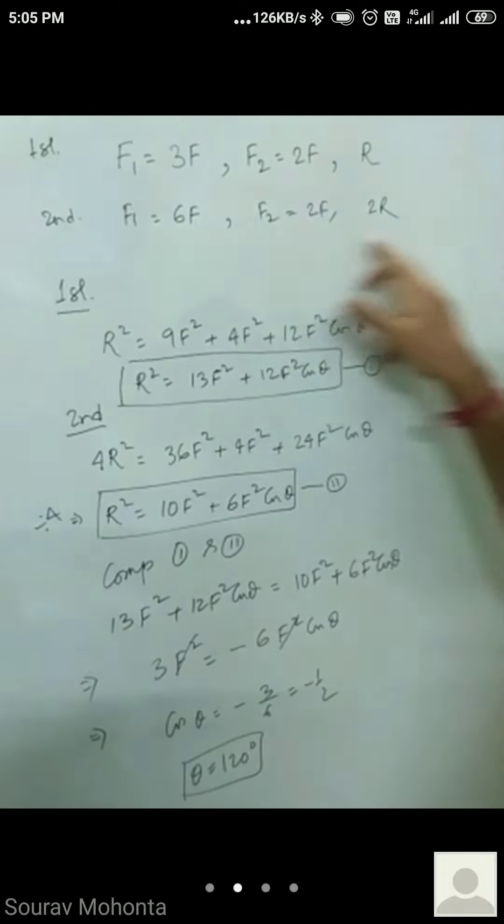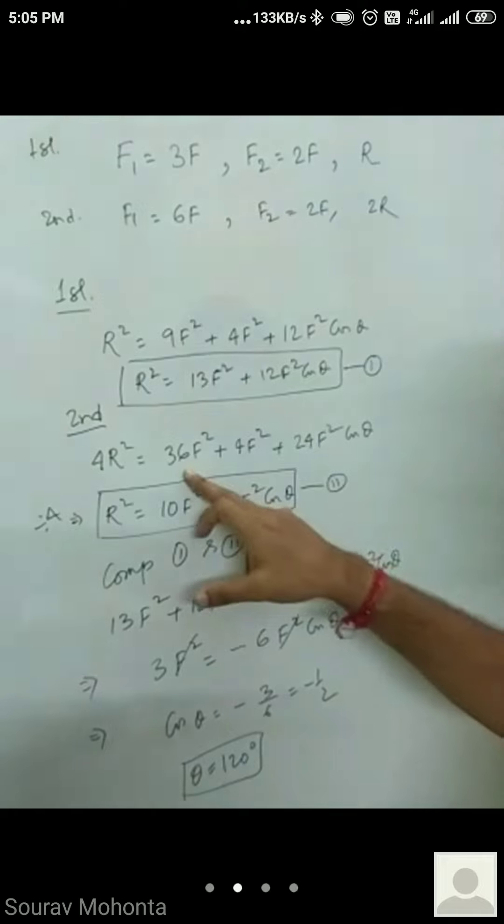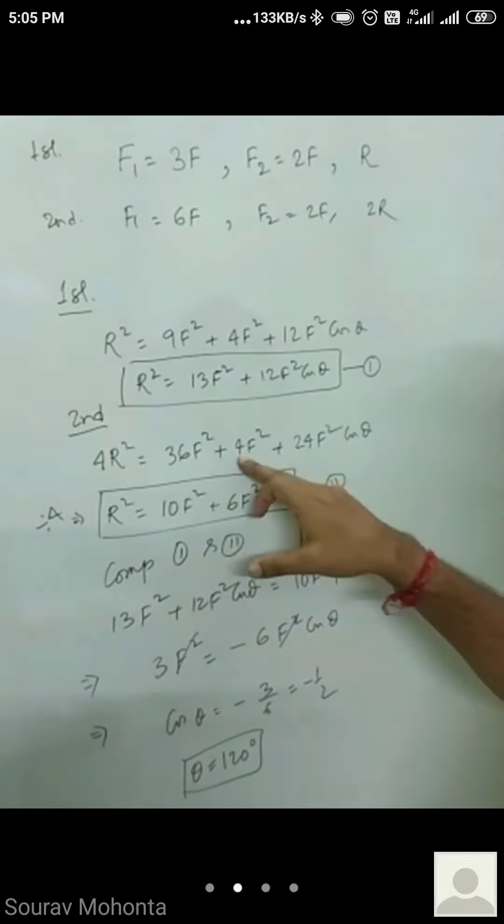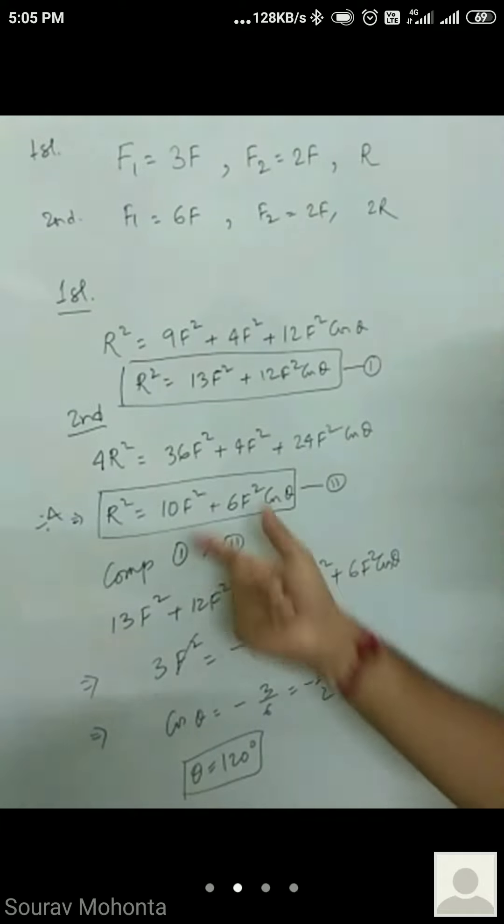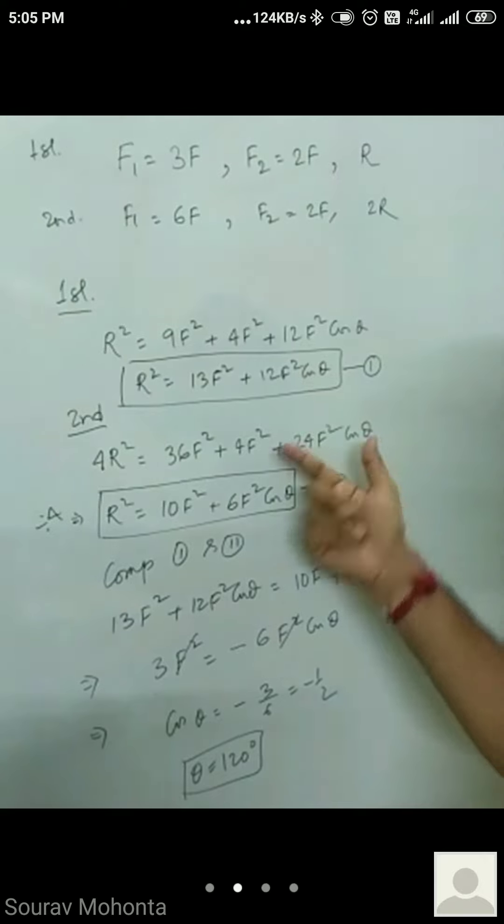Second case, 2R square, that is 6F square, 36F square plus 4F square plus 6 into 2, that is 12 into 2, 24F square cos theta. That is 36 plus 4, 40F square plus 24F square cos theta, that is 4R square.